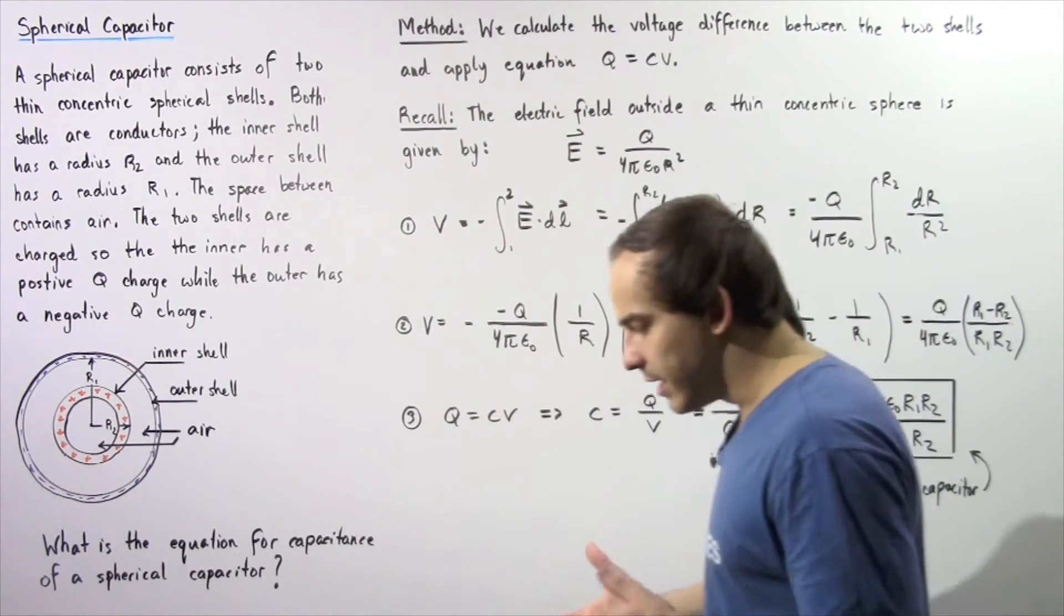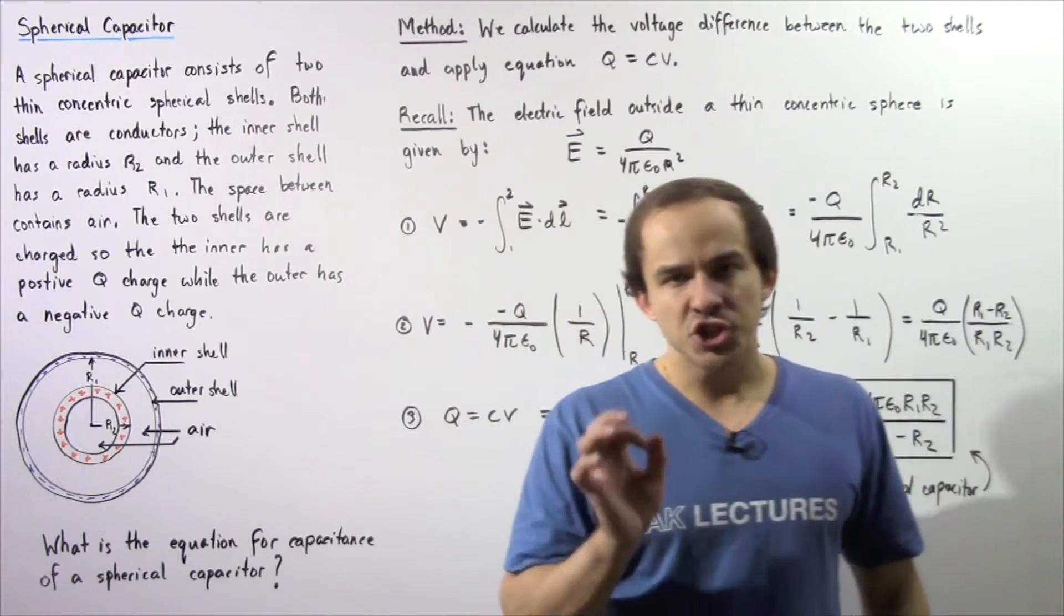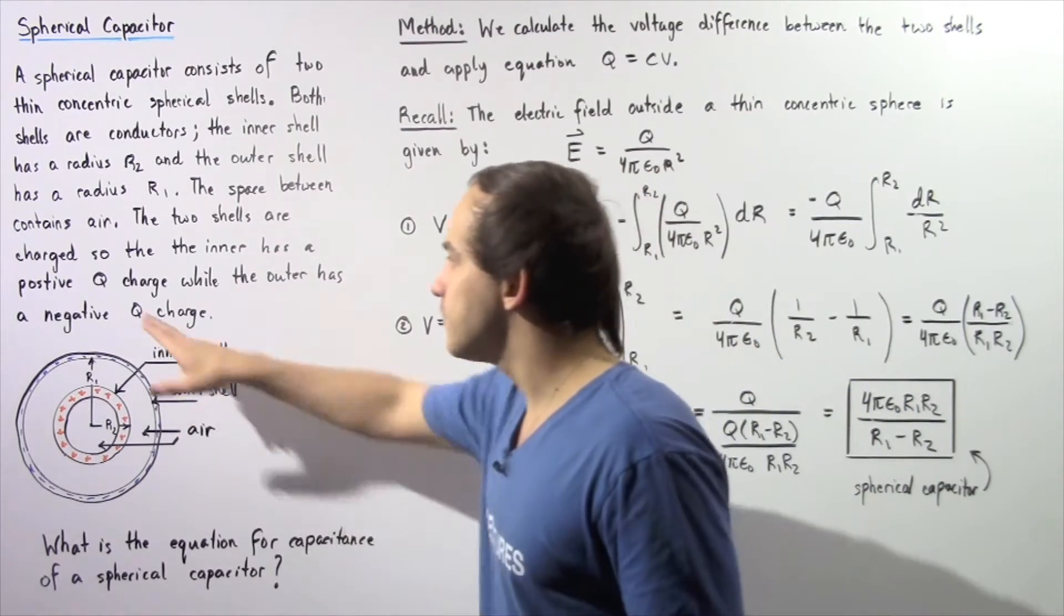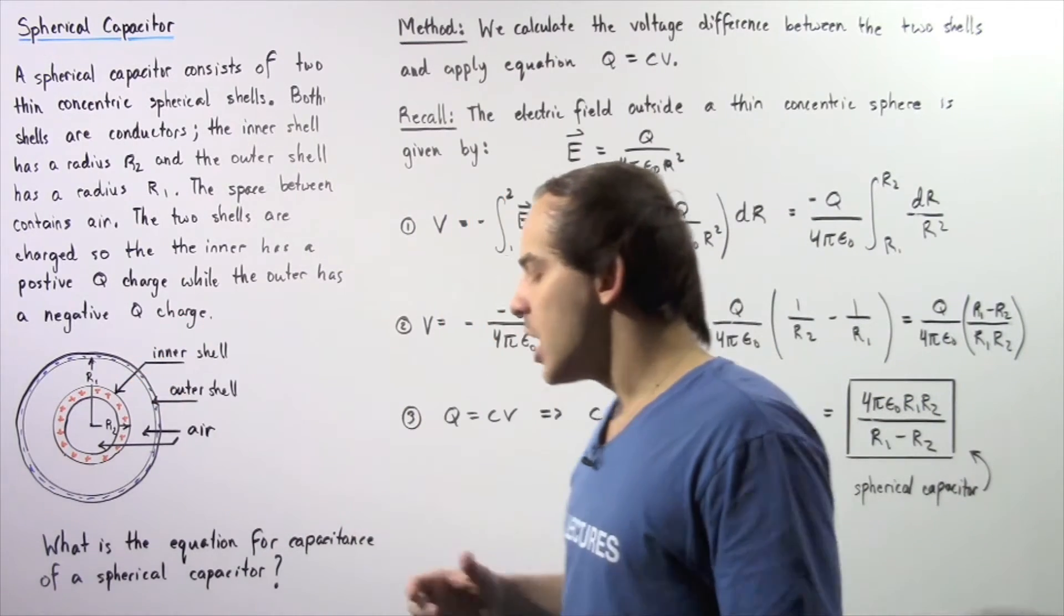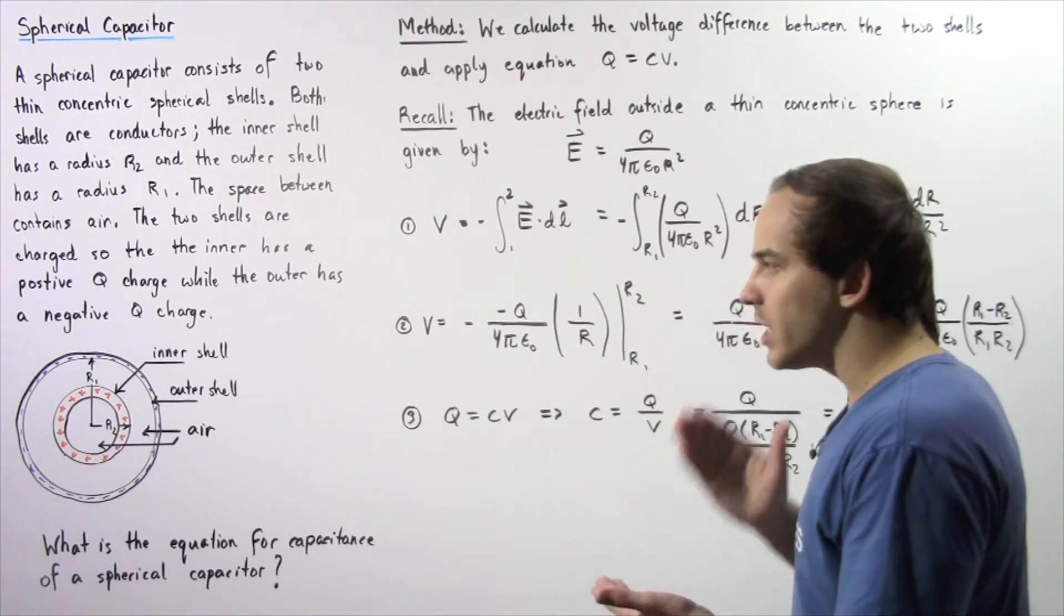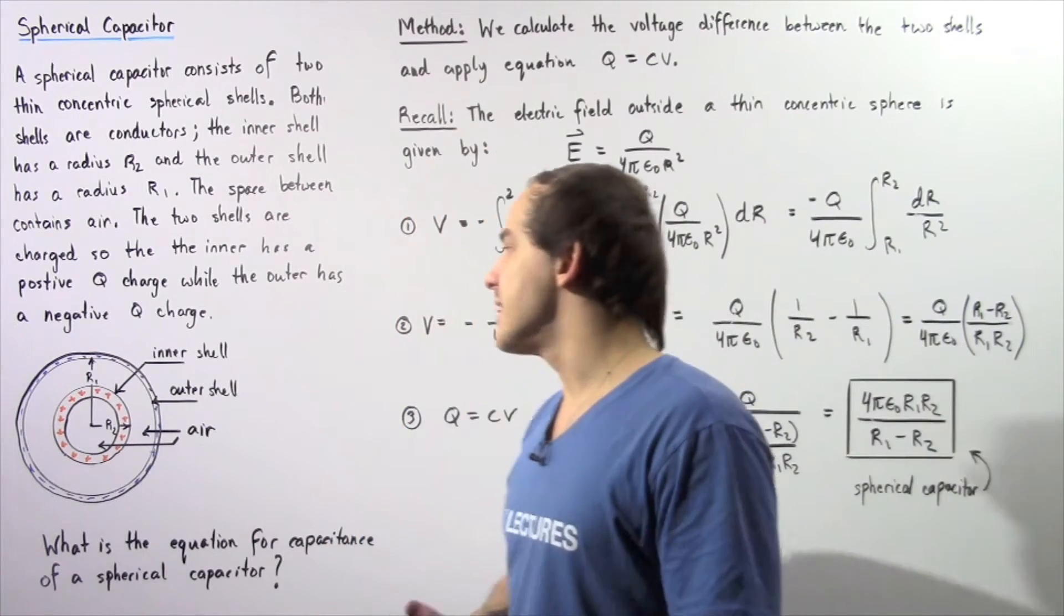These two shells are charged in such a way that the inner shell contains a positive Q charge while the outer shell contains a negative Q charge. So the amount of charge on each shell is equal but opposite in sign.